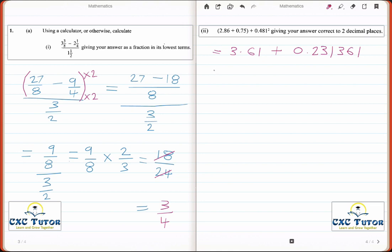So using your calculator again, we simply add these together. 3.61 plus this expression would give me 3.841361. But our answer is supposed to only be in two decimal places. Therefore, we need a cut here. And our final answer then would be 3.84.